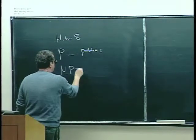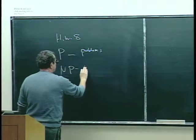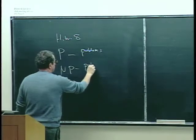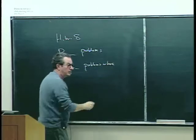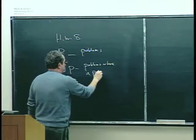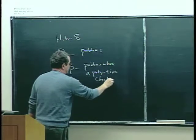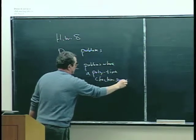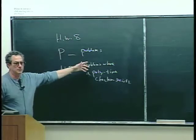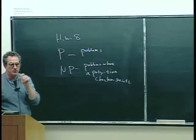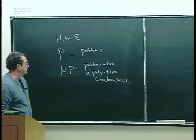And then formally, NP was: there exists decision problems where a polytime checker exists. But actually, neither of these definitions that we did last time, nor the examples we did last time, are formally correct. And so that's what I want to do today — to really make this formally correct.